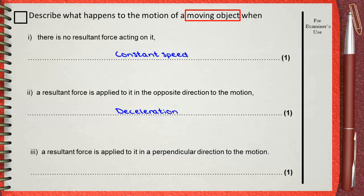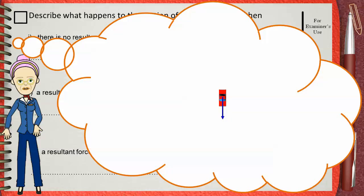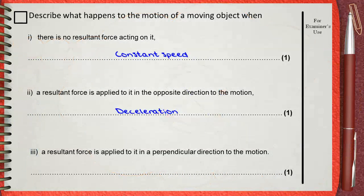Part III is a little different. What if this moving object has a resultant force that is perpendicular to the direction of its motion? If this car is moving in the direction shown by the blue arrow and a force is applied perpendicular to its motion, this car will change direction — this is called centripetal force. As long as this perpendicular force is applied, it will keep changing direction again and again, moving in a circle.